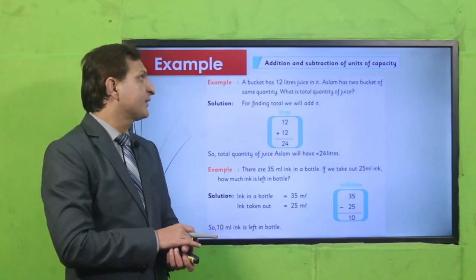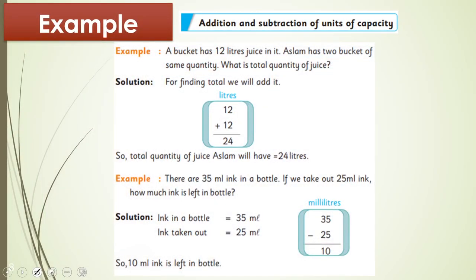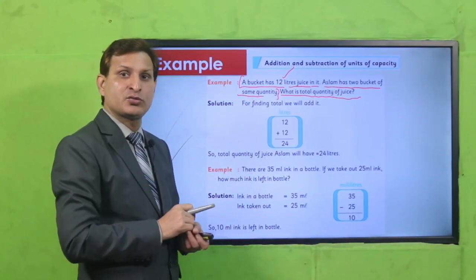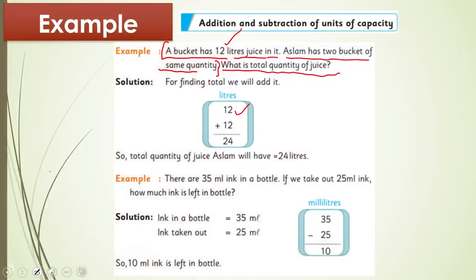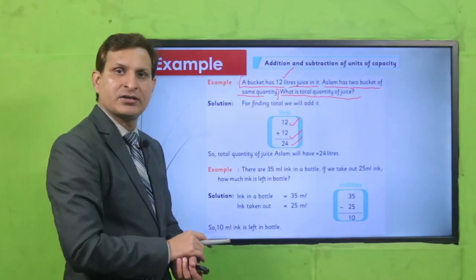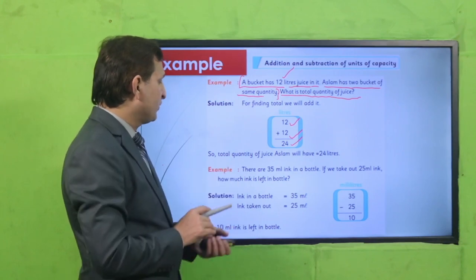Here is an example taken from your book. A bucket has 12 liters of juice in it. Aslam has two buckets of the same quantity. What is the total quantity of juice? When you have to find the total, it means you have to find the sum. The given information: 12 liters of juice in one bucket, and Aslam has two buckets.